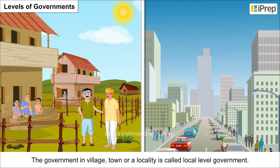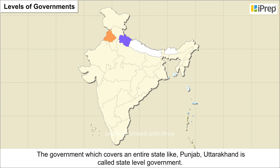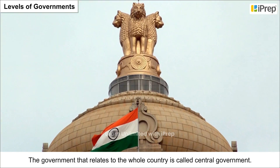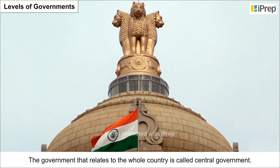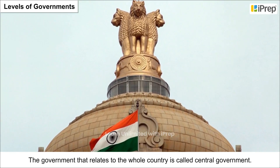The government which covers an entire state — like Punjab or Uttarakhand — is called state-level government. The government that relates to the whole country is called central government.